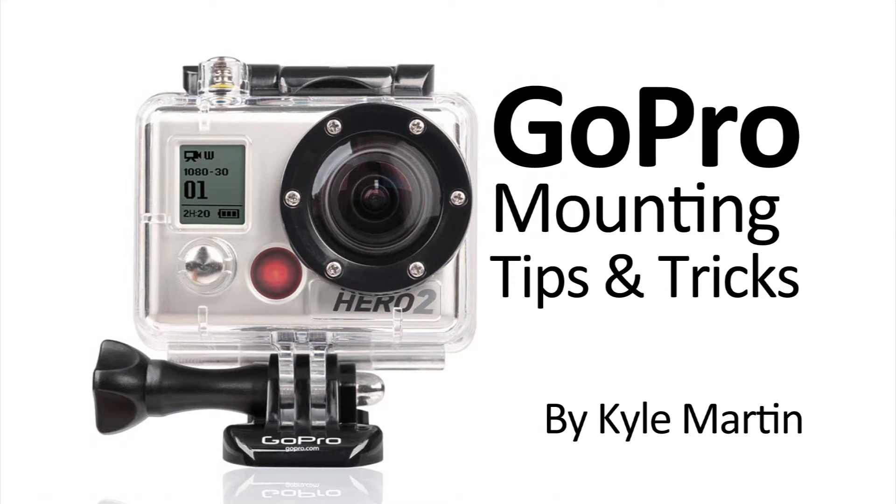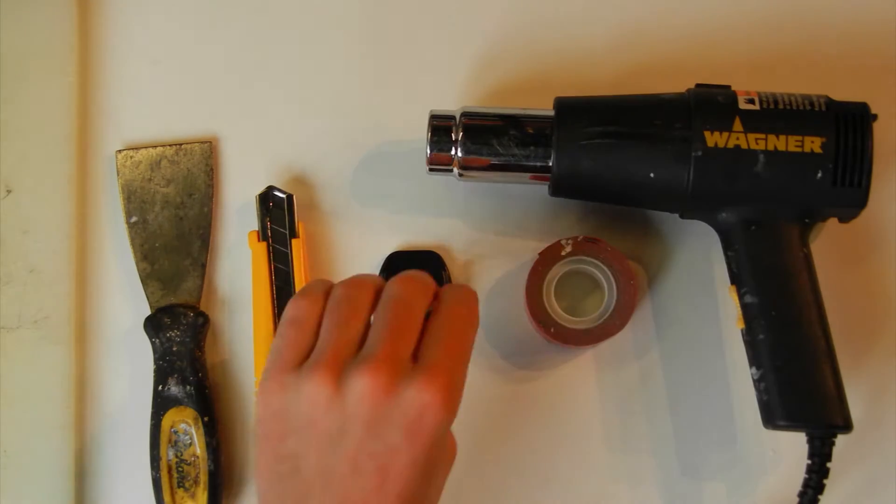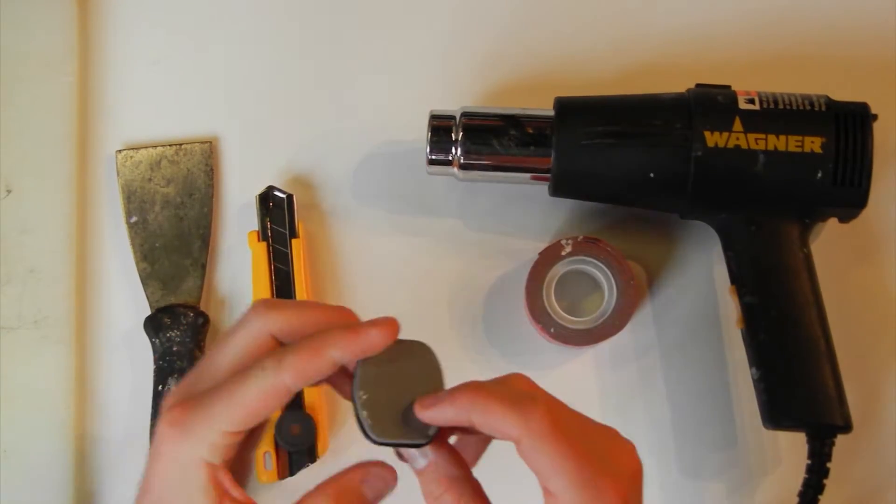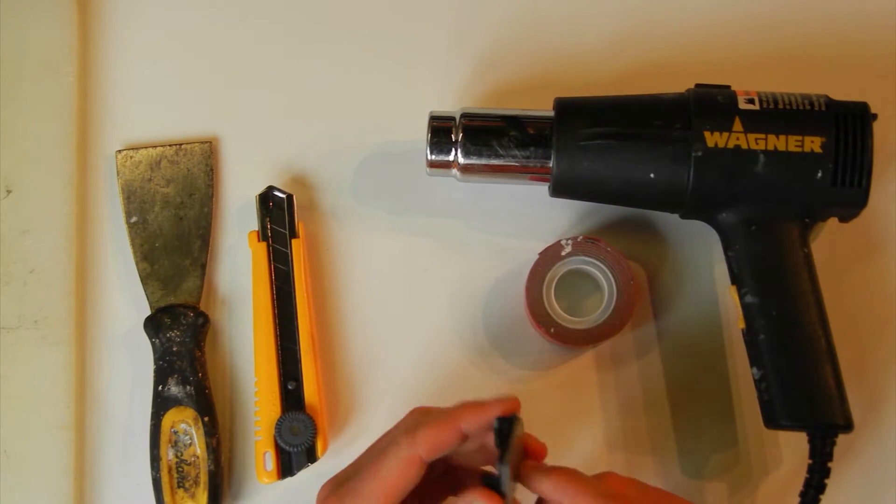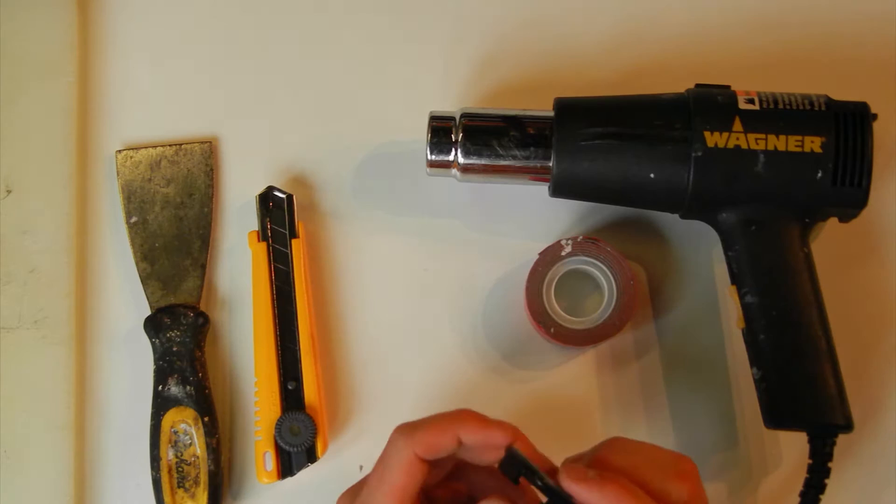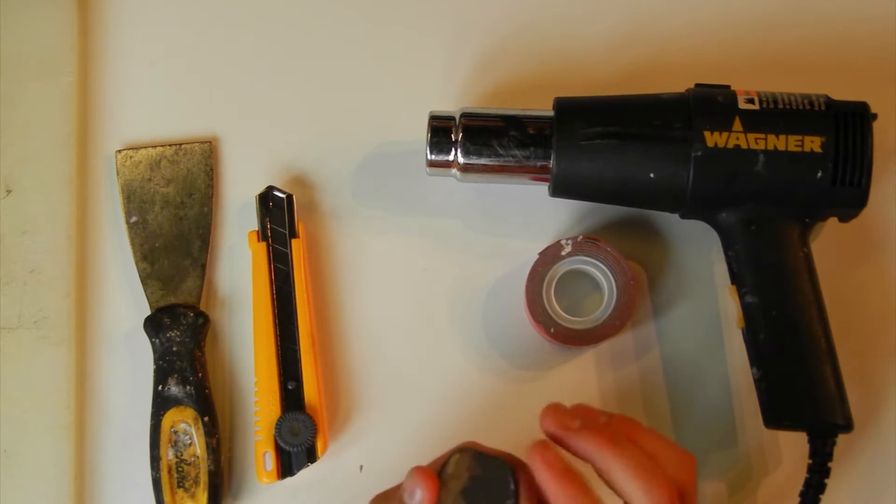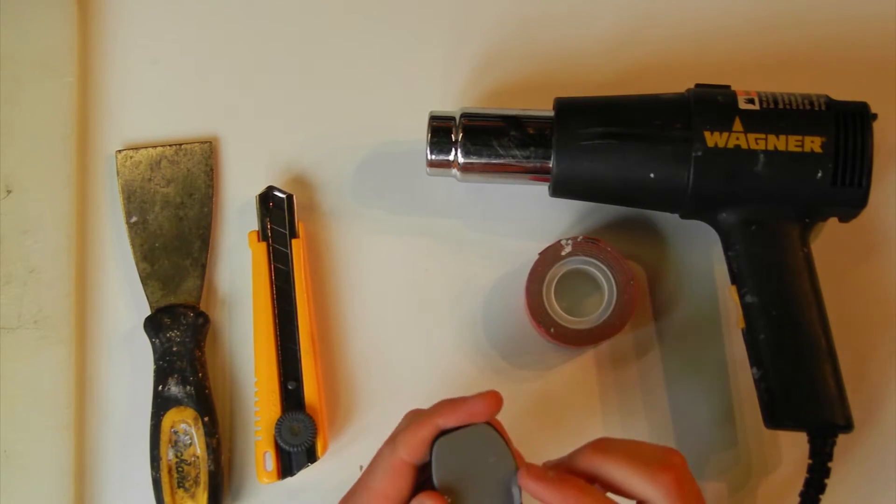It's time for another GoPro mounting tips and tricks video. In this video, I'm going to be talking about how to replace the double-sided sticky tape on the bottom of an adhesive mount. This is the adhesive mount that came off my ski when it fell off. So the stick on the bottom of this is now completely useless and will not stick to anything at all.